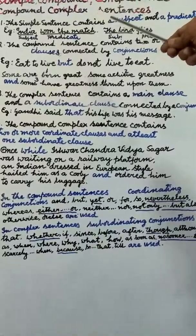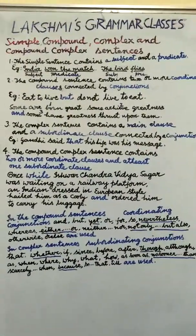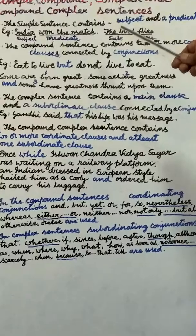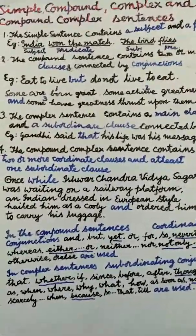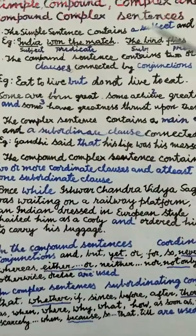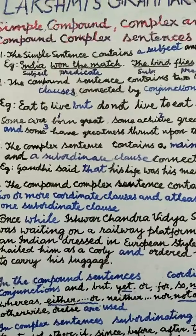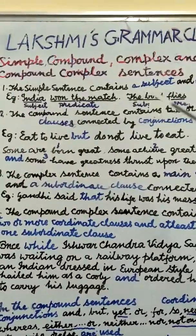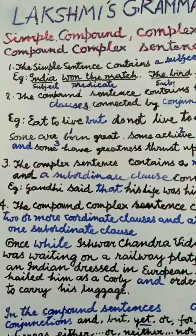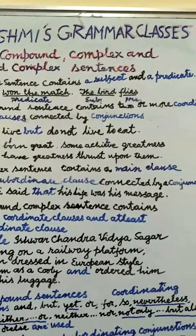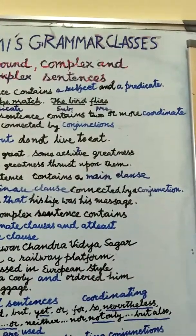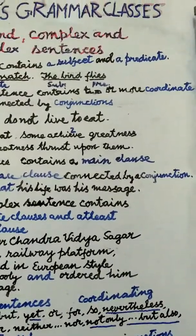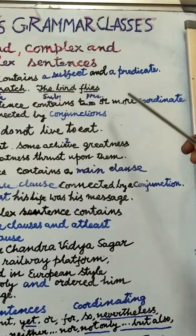A predicate may or may not contain an object. An object, as you know, is the name of a person, place, or a thing affected by the action of the verb. Here the object is 'the match'. India — subject; won — verb; the match — object. Look at the next example: The bird flies. The bird is the subject; flies is the predicate. Here the predicate does not contain an object.